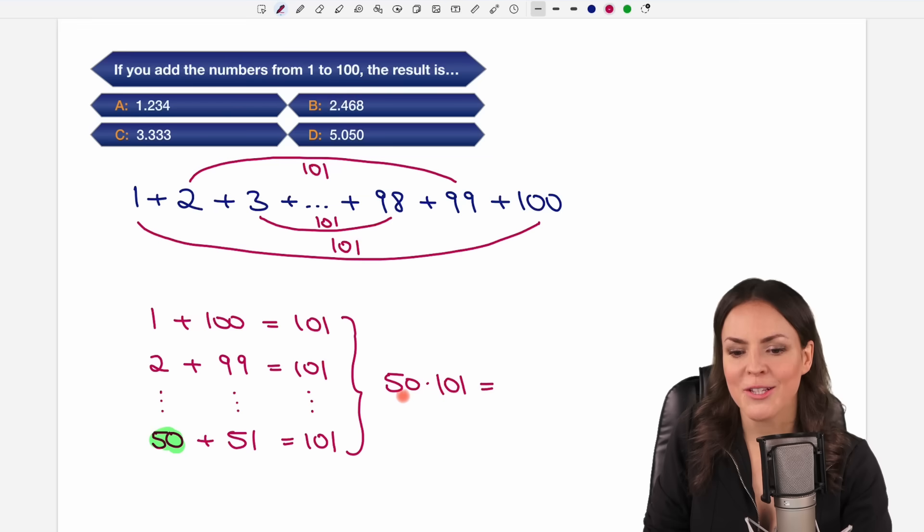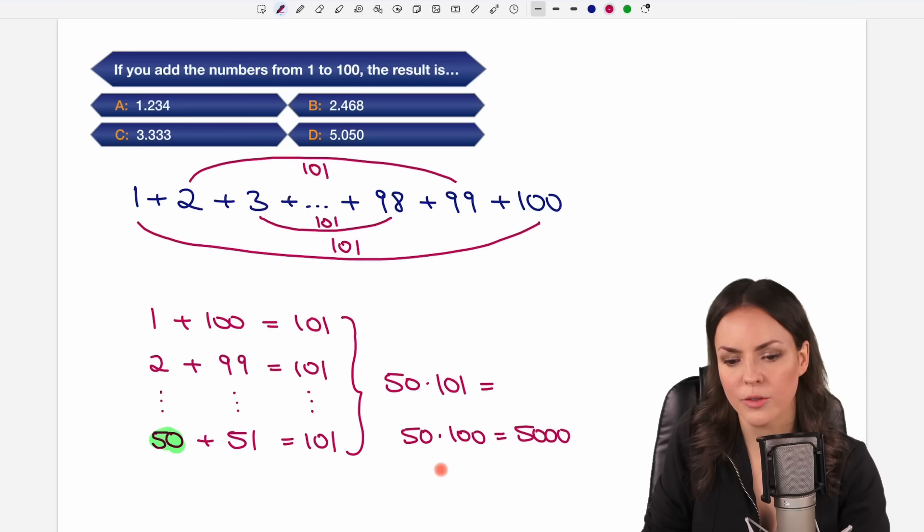It's pretty fast right? So how can we calculate this? We can first calculate 50 times 100 which equals 5000. And then we have to add 50 times just this 1 which would be 50. So these two together would be 5050.